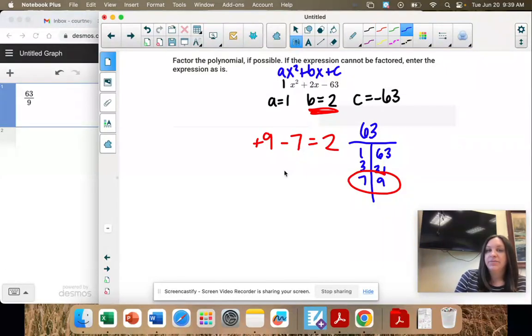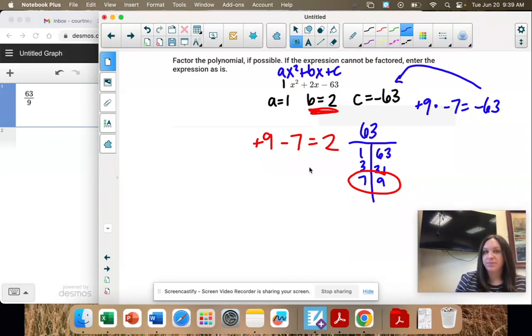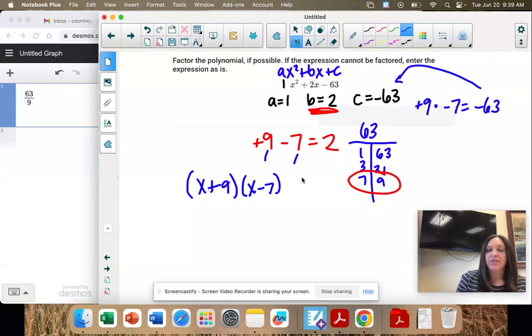And that's it. Our signs are right. Positive times a negative. So positive 9 times negative 7 gives us that negative 63. That's what we want. So we're going to take our factors: x plus 9, x minus 7.